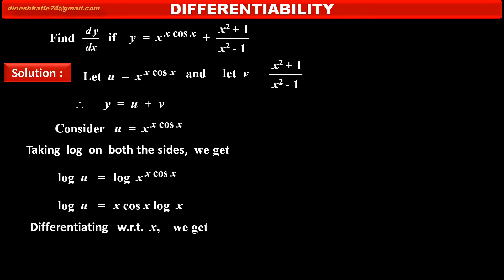Differentiating above with respect to x, on the left hand side the derivative of log u gives 1 upon u into du by dx. On the right hand side, we have three terms: x, cos x, and log x. So we apply the product rule for three terms. In the first part, write x cos x as it is, into the derivative of log x.